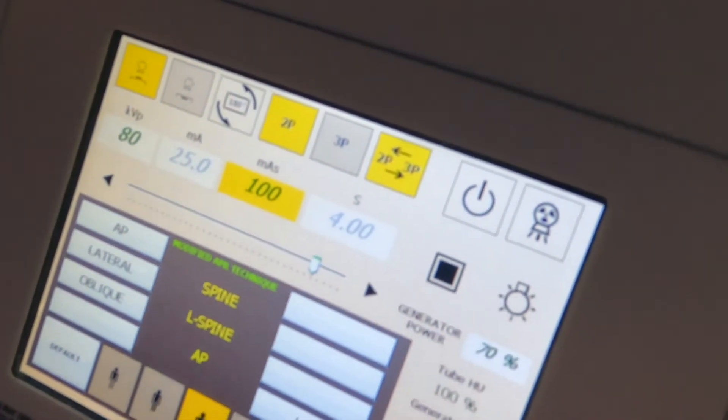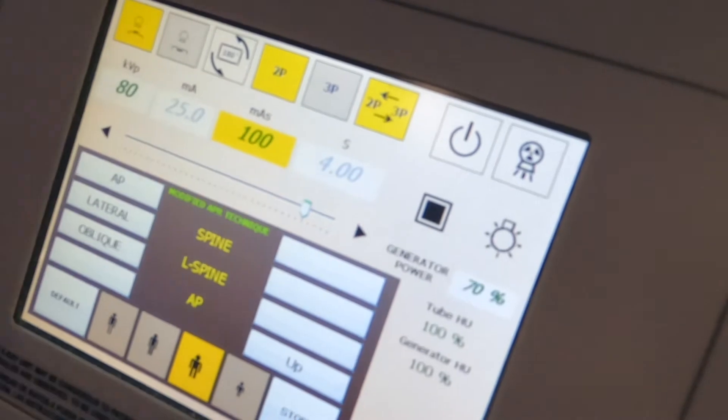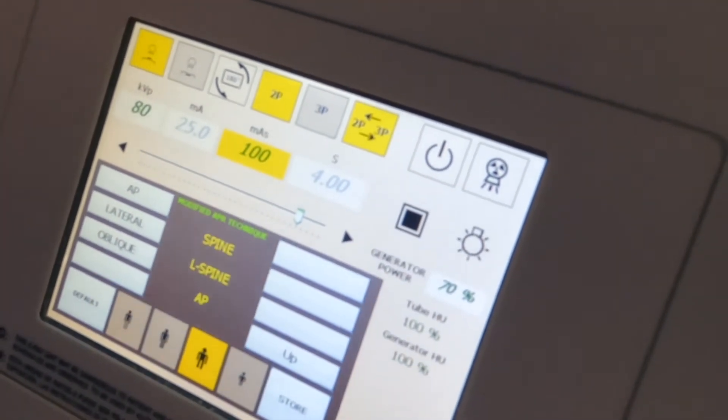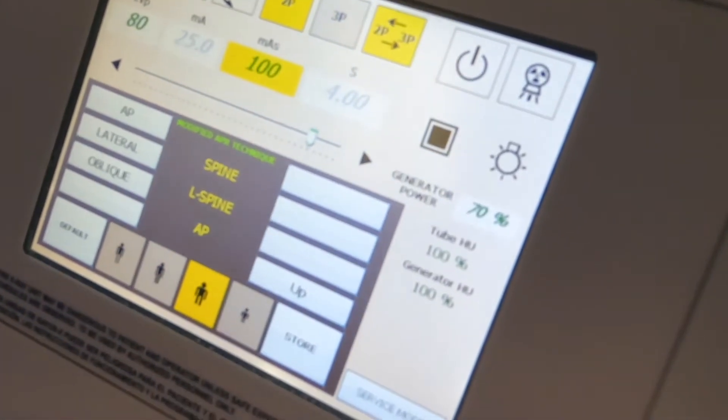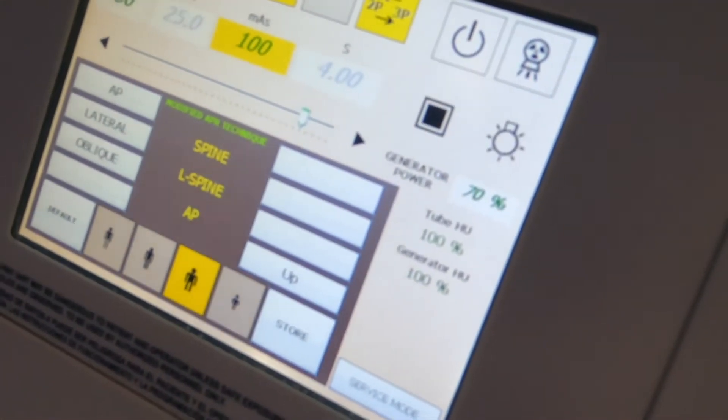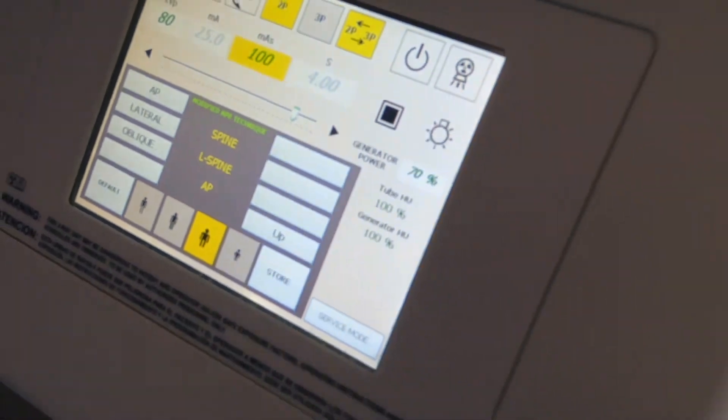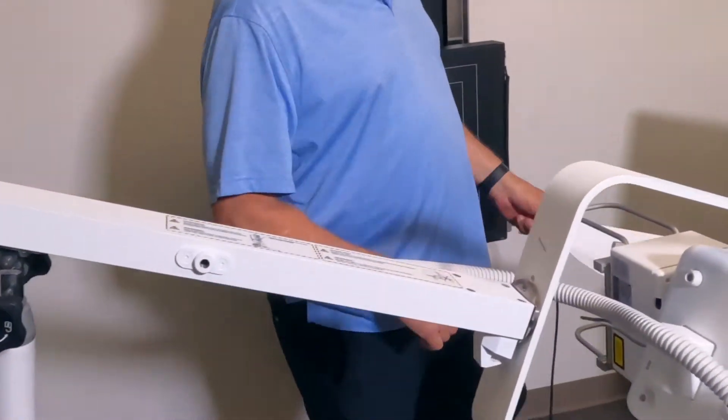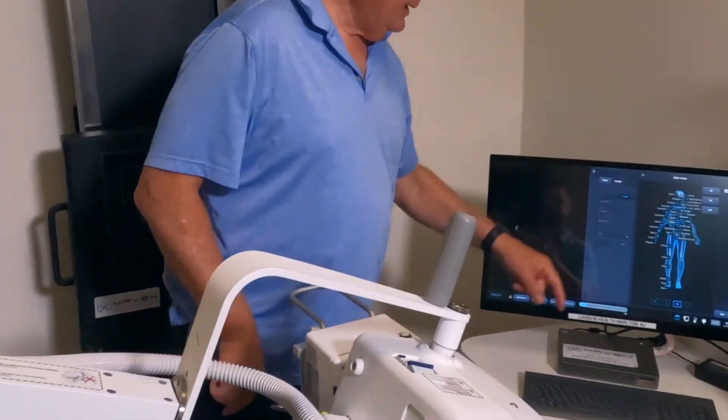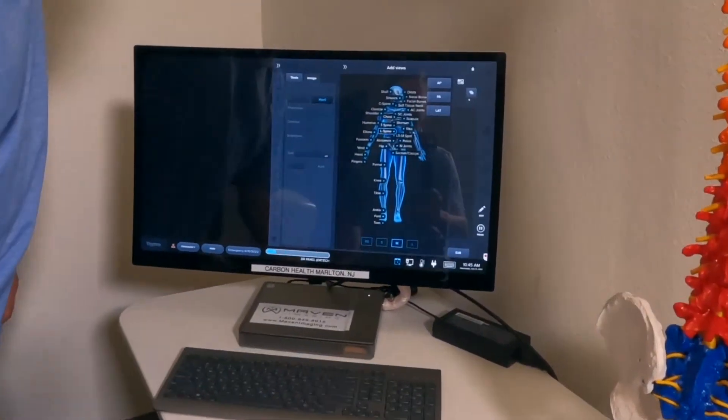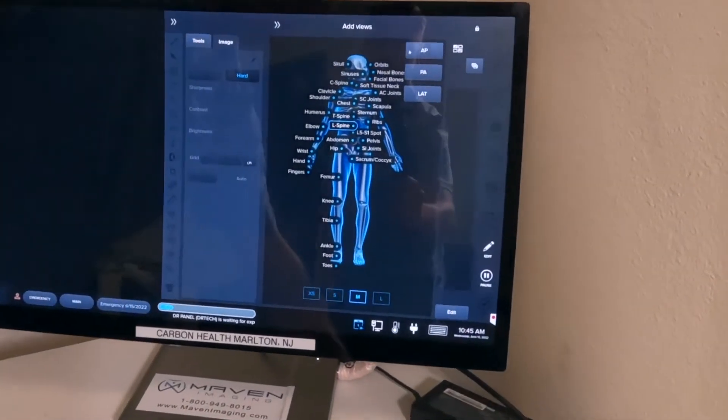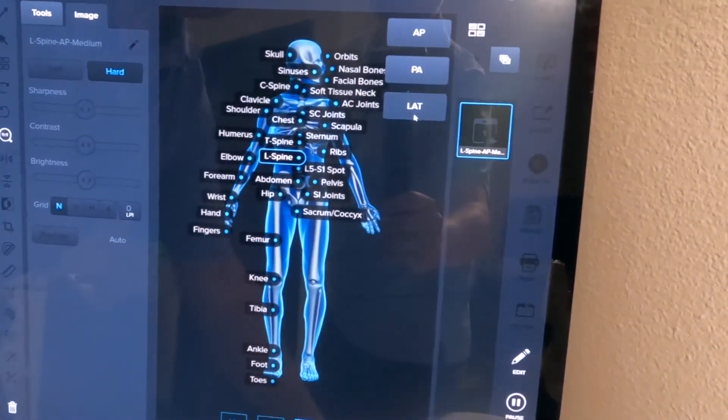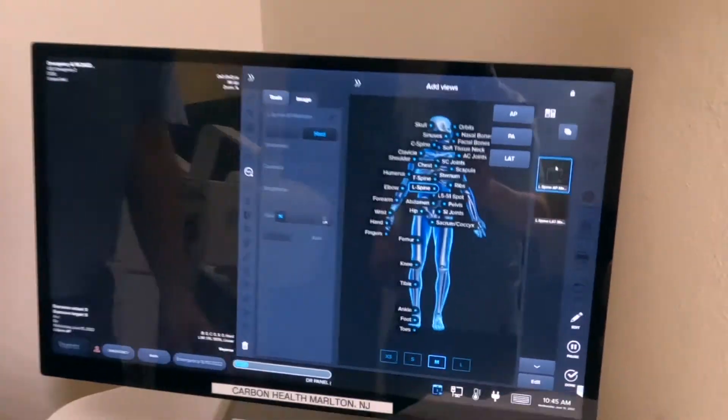For MAS, we need to increase this up to 100 because I'm a big boy. The technique charts that we provided say on this particular AP shot it should be 80, but I'm much bigger than your average patient. Now we're ready to take a shot.